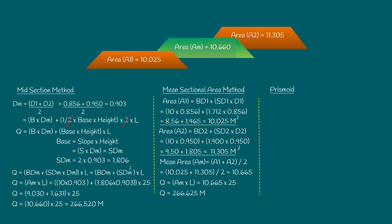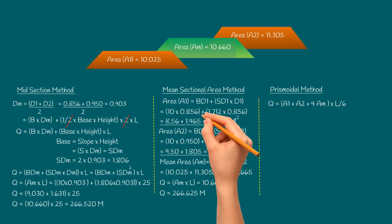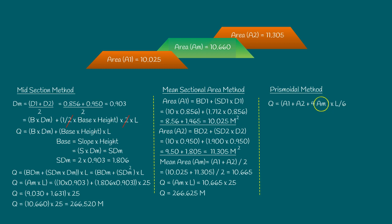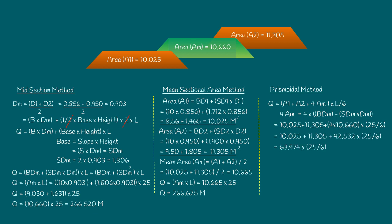Next is the prismoidal method, which is most commonly used in the engineering field and considered the most accurate method. In this method, the formula is: quantity q = (a1 plus a2 plus 4am) × (l / 6). Here, am means the area calculated in the midsection method using the mean depth, so 4am = 4 × (bdm plus sdm × dm). Accordingly, the value is (10.025 plus 11.305 plus 4 × 10.66) × (25 / 6), which gives 266.558 m³.